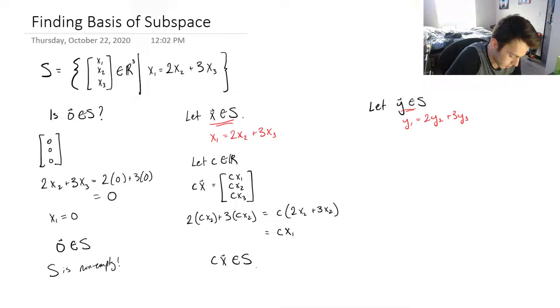So, x plus y. These components are x1 plus y1, x2 plus y2, x3 plus y3. So, 2 times the second component, x2 plus y2, plus 3 times the third component. Let's expand this out.